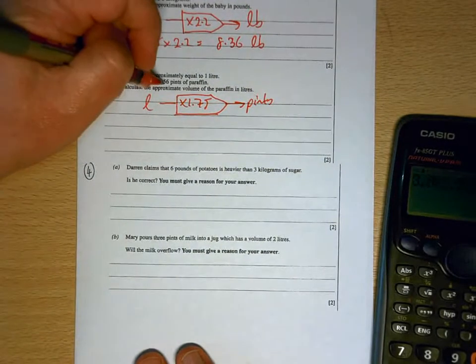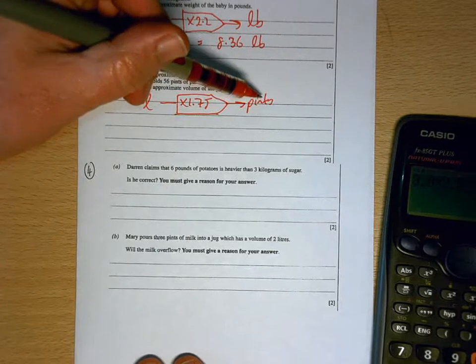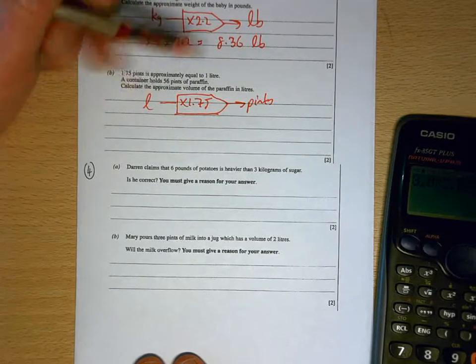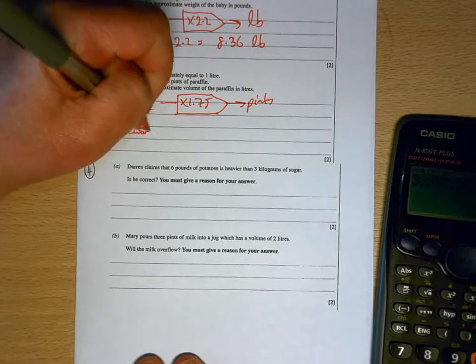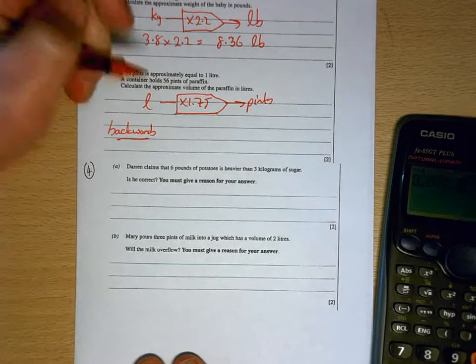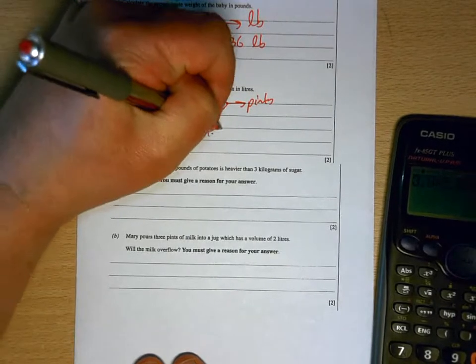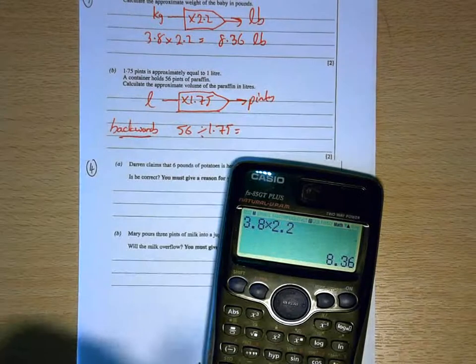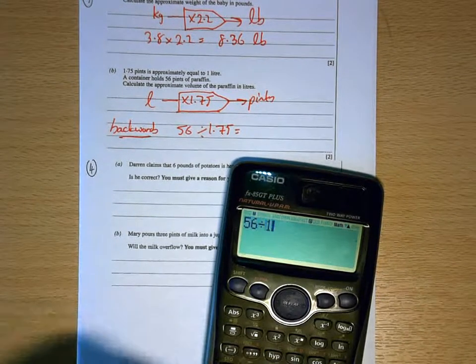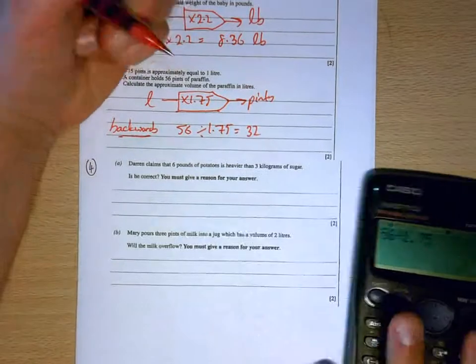A container holds 56 pints of paraffin, so we're starting there and we want to turn it into liters. So we're going backwards, so we're going backwards like we did with exchange rates. So we're going to take 56 and divide by 1.75, which is 32 liters.